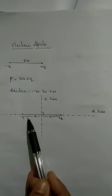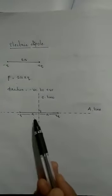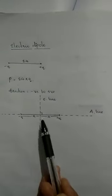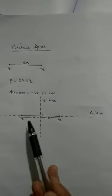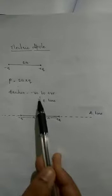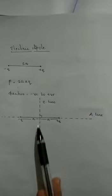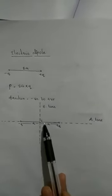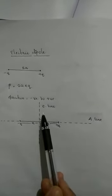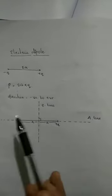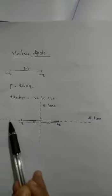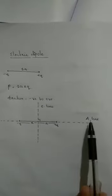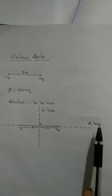The line joining the two charges separated by a distance is called the axis of the dipole. The perpendicular line is called the equatorial line, and the line along the dipole is called the axial line.